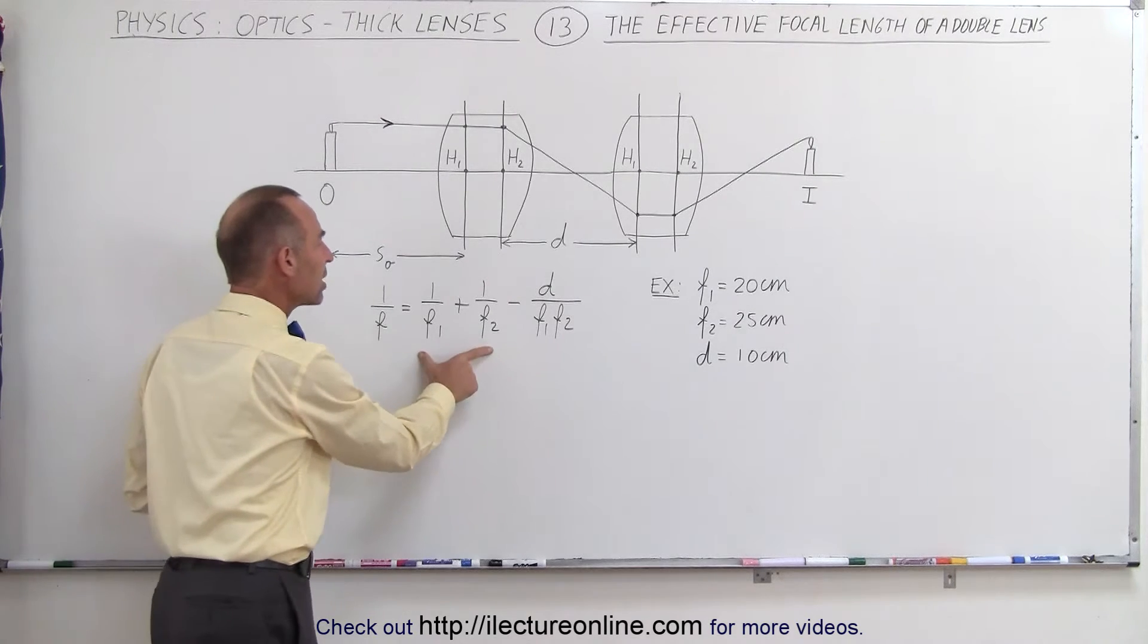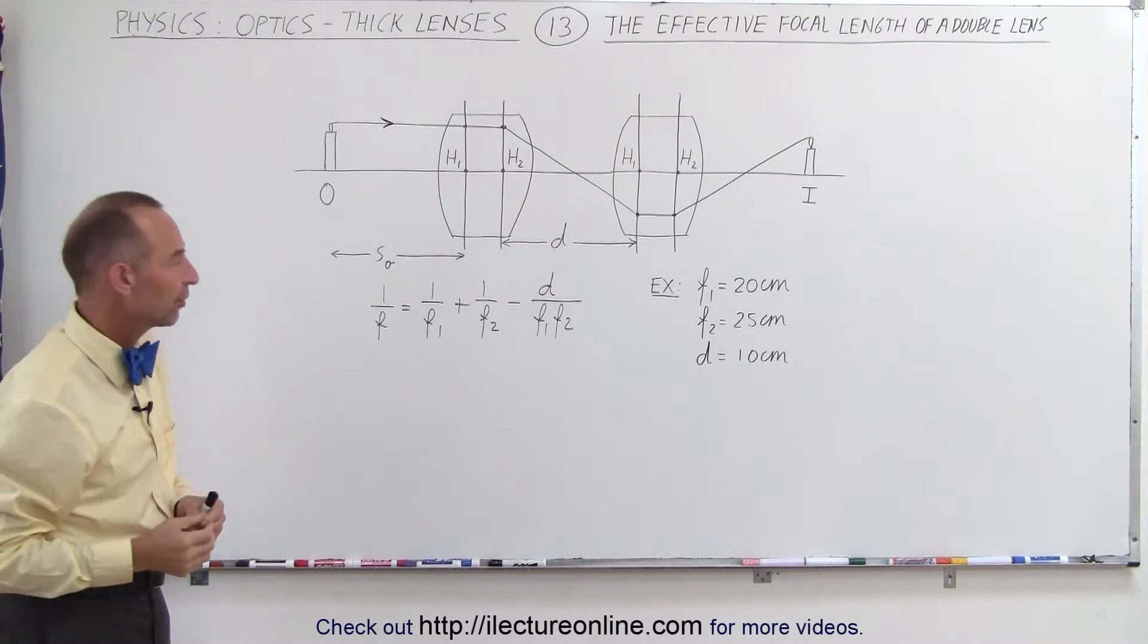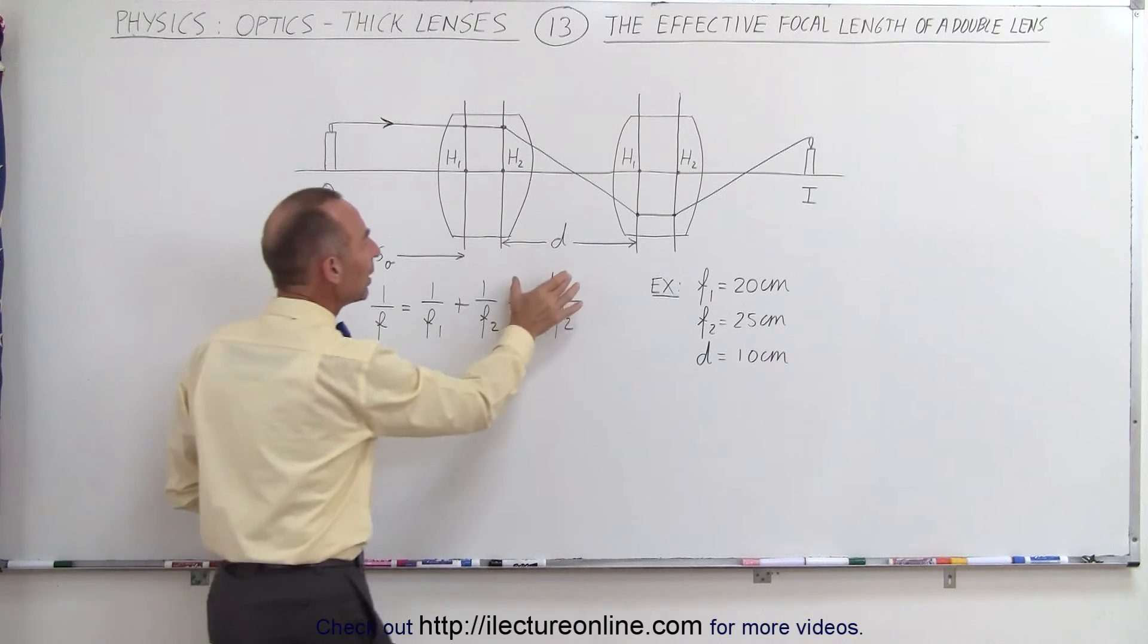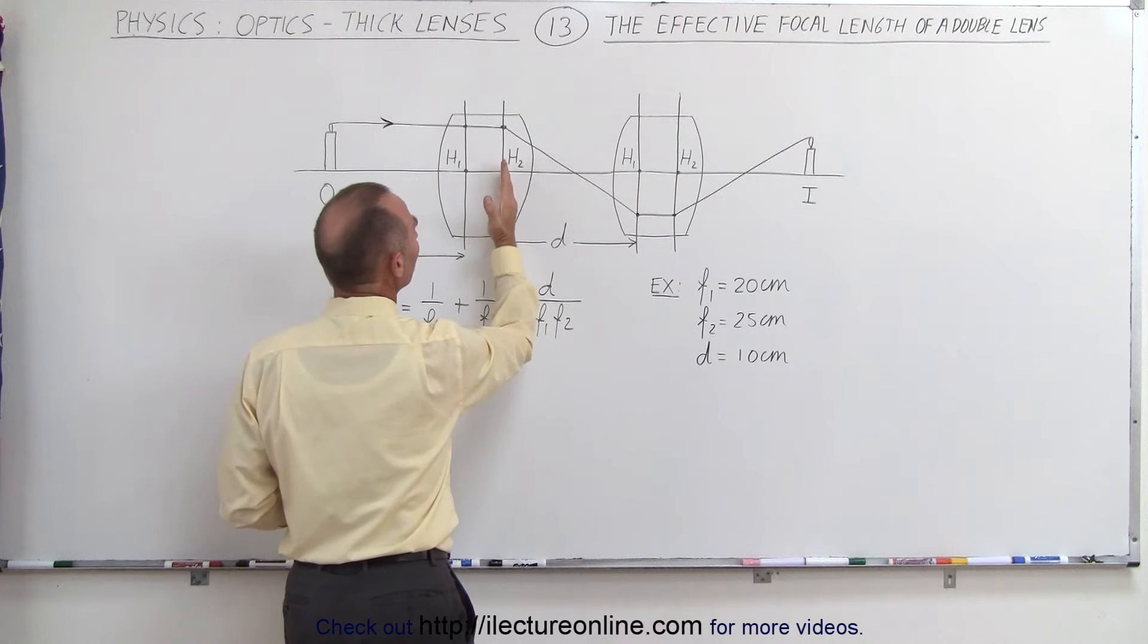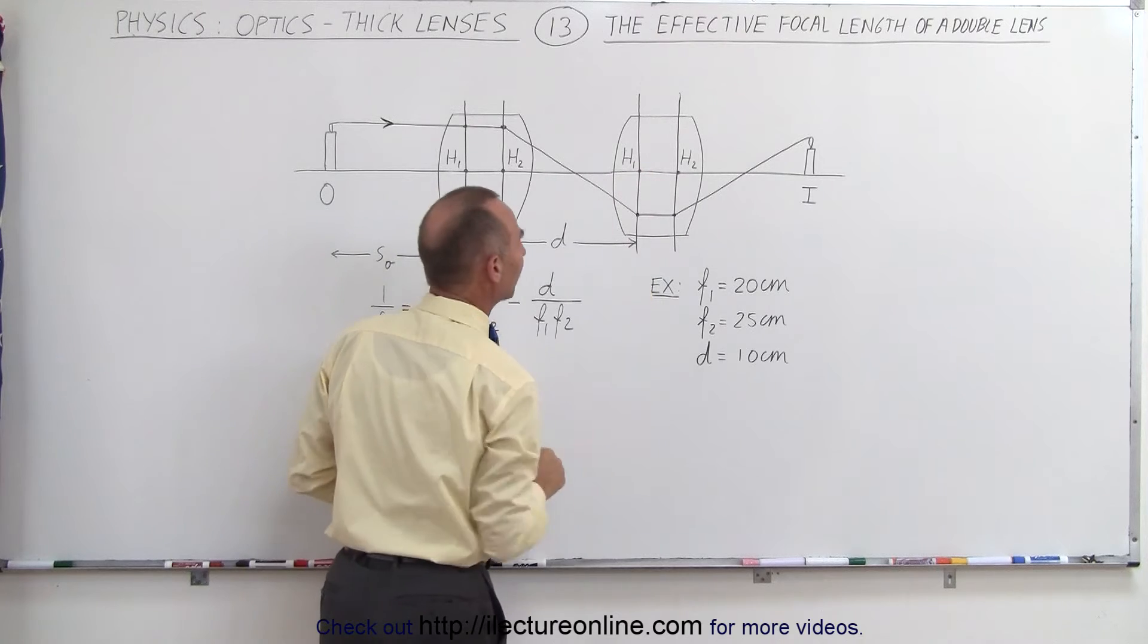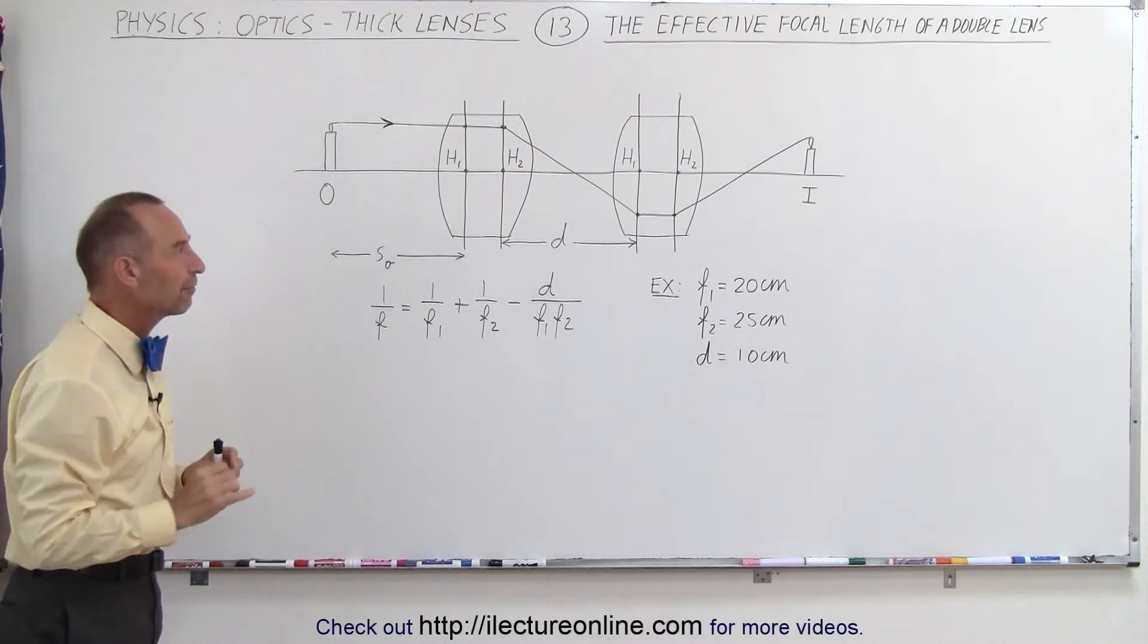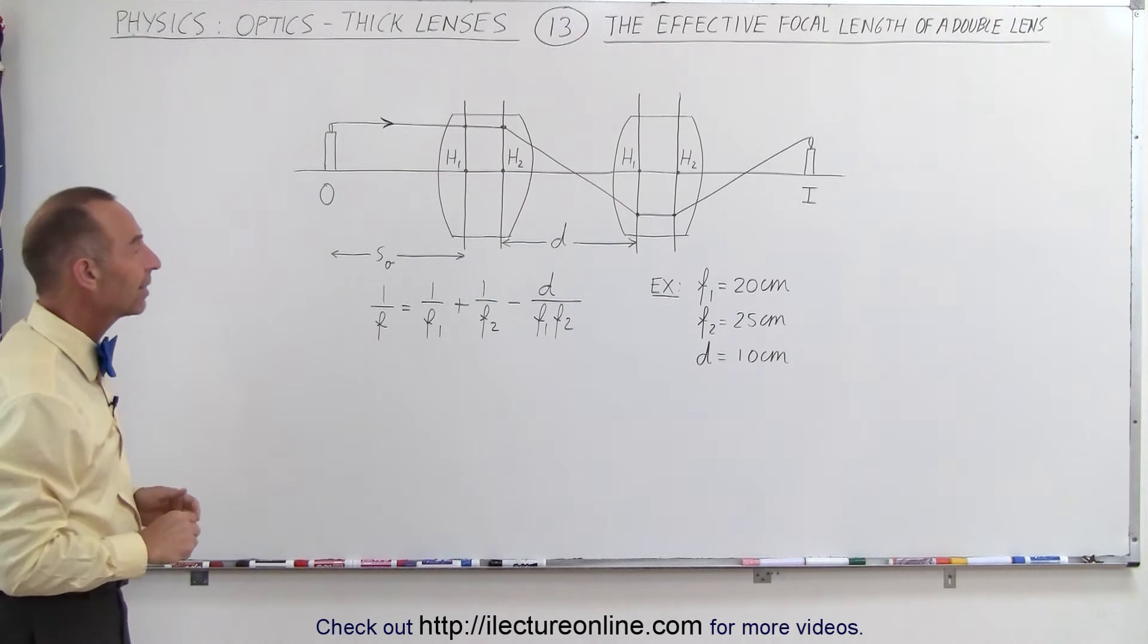F1 and F2 here are the effective focal lengths of the thick lenses. We don't have to do that for thin lenses. And the distance between the lenses is from the principal plane on the back side of the first lens and the principal plane on the front side of the second lens, the exact distance between those two planes. So that's also a little bit different between thick lenses and thin lenses.